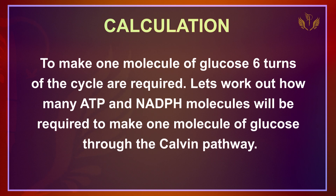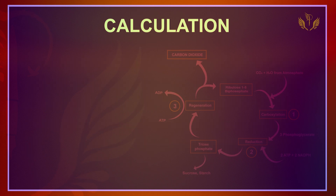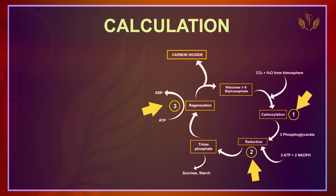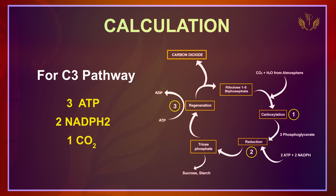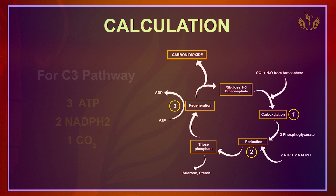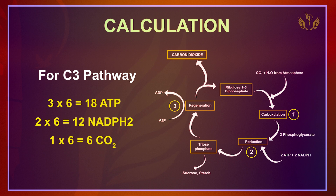Now let's talk about the C3 pathway calculation — ATP and NADPH formation. Per turn of the cycle: 3 ATP, 2 NADPH, and 1 CO2 are required. Since we need 6 carbons for glucose, we multiply everything by 6: 3×6 = 18 ATP, 2×6 = 12 NADPH, and 1×6 = 6 CO2.